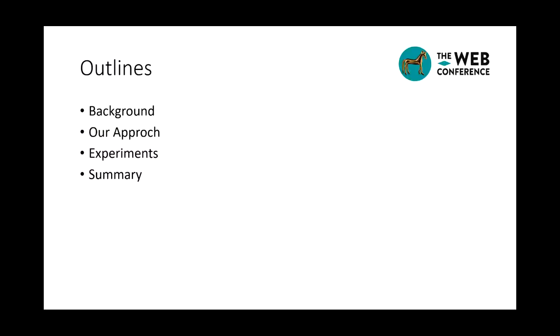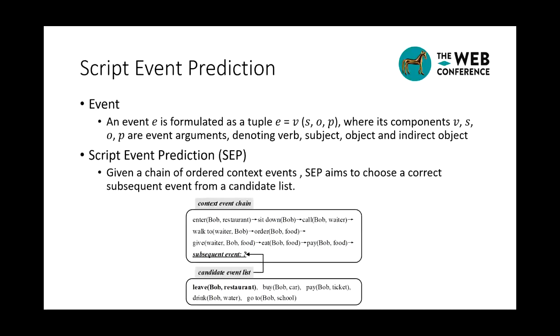Here is the outline of this presentation. An event is formulated as a tuple, where its components vSOP are event arguments denoting verb, subject, object, and indirect object. This paper focuses on the task of script event prediction. Given a chain of ordered context events, SEP aims to choose a correct subsequent event from a candidate list.